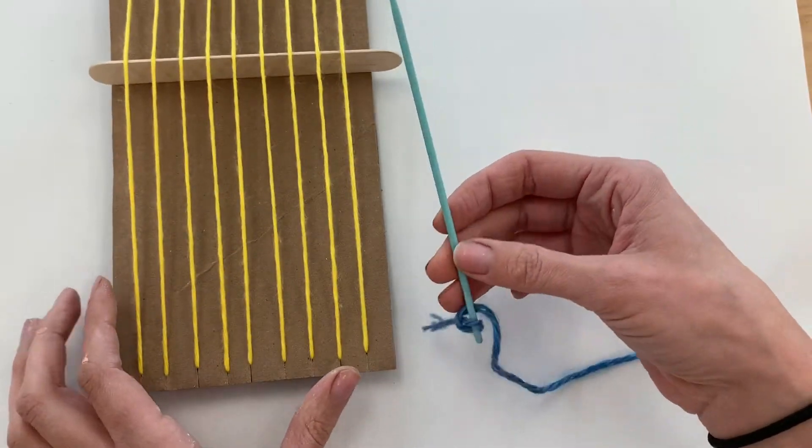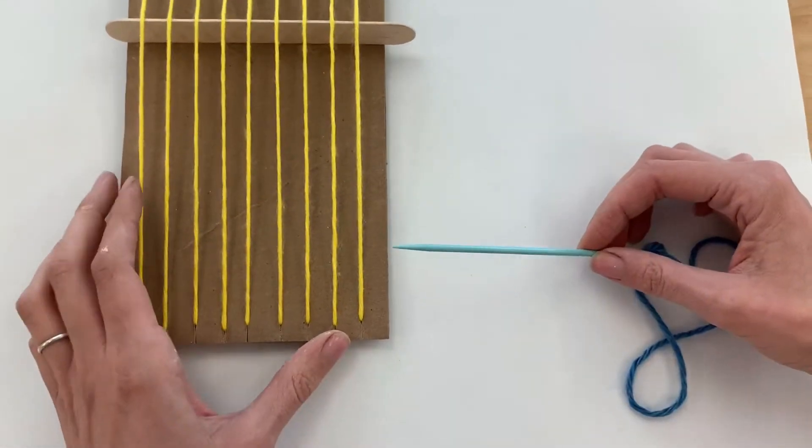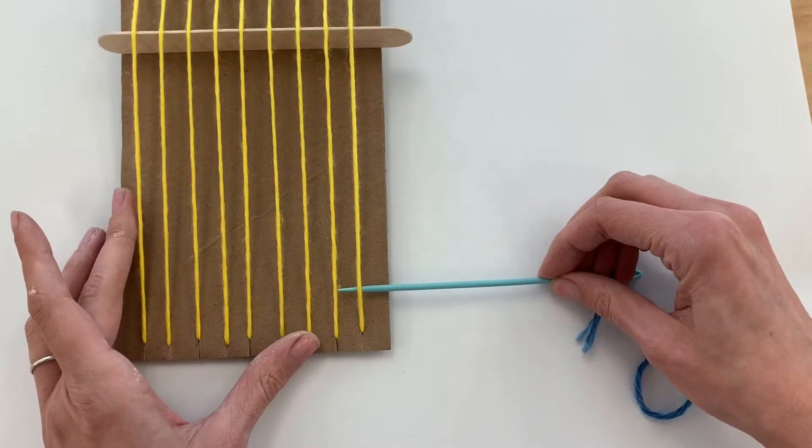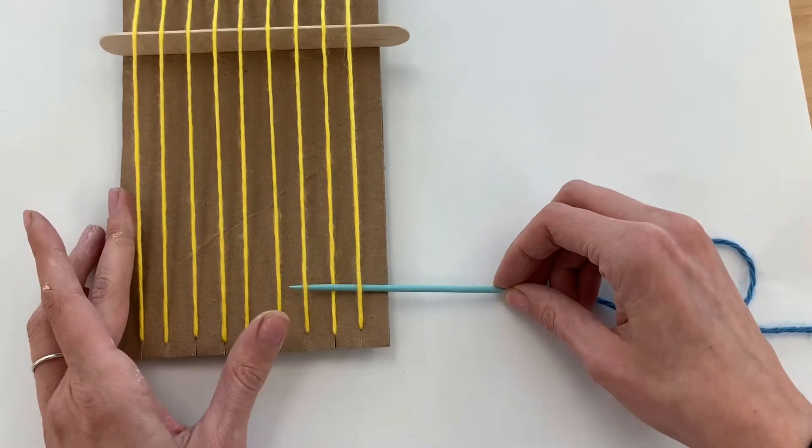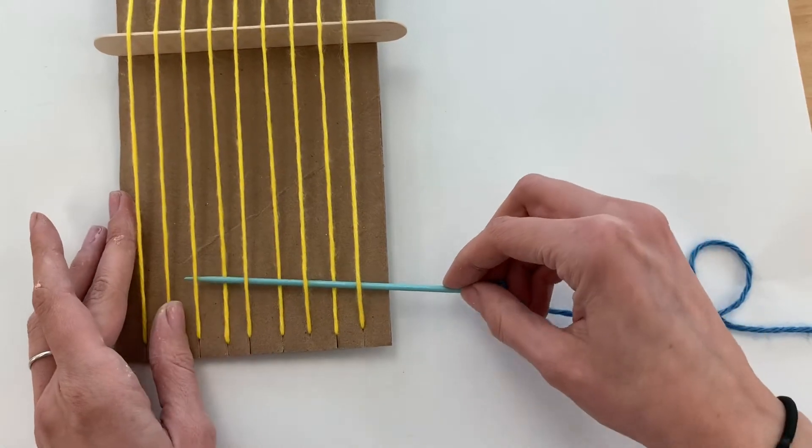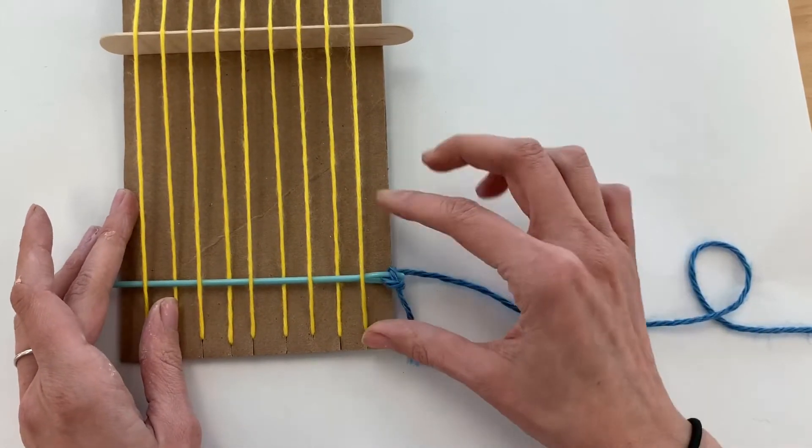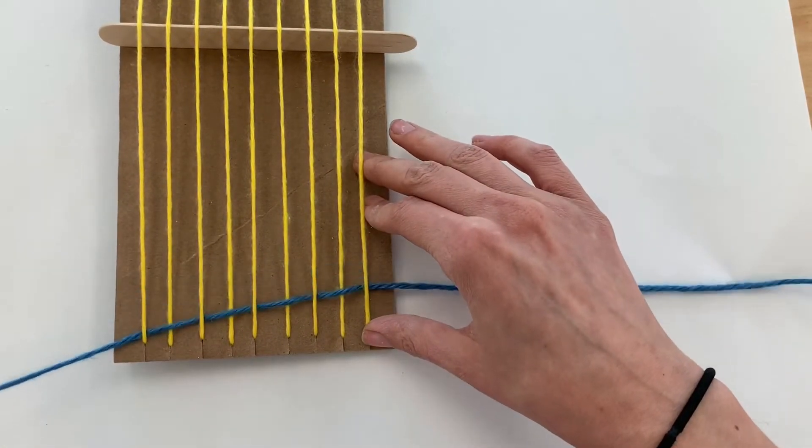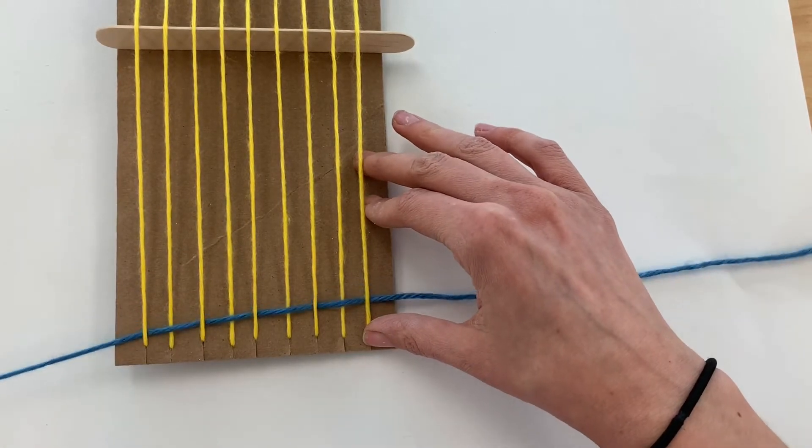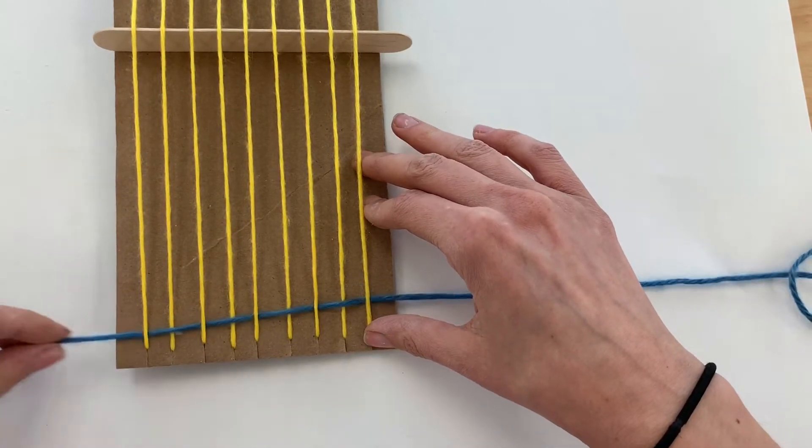Then I'm going to use my weaving needle here, and I'm going to start by going underneath the first one, over the next one. And I'm going to continue that pattern all the way across. It's really important that you never go over or under two at a time. For tabby weaving, we are only going over and under one at a time.